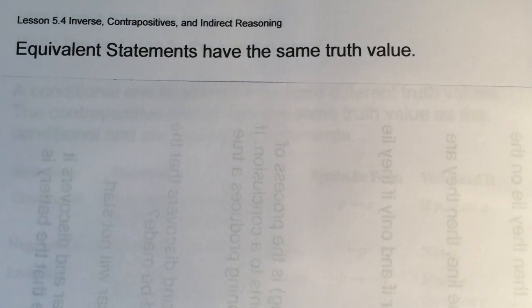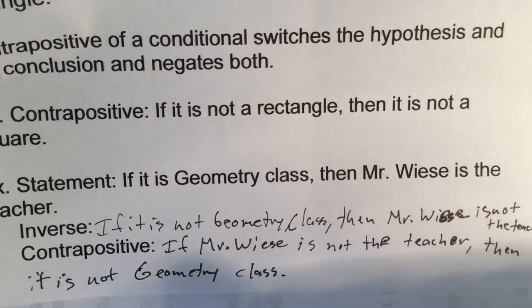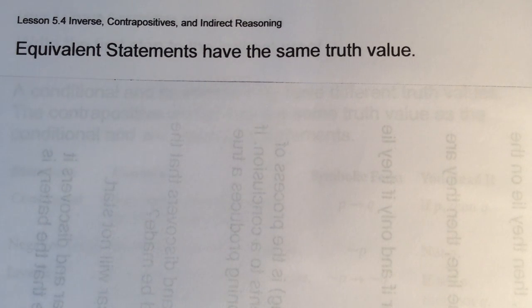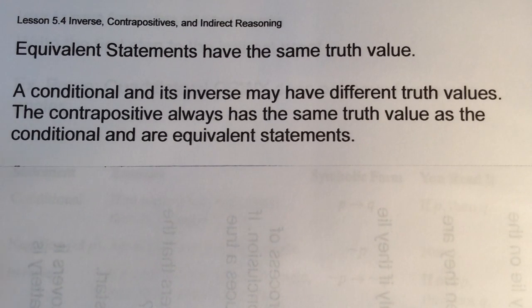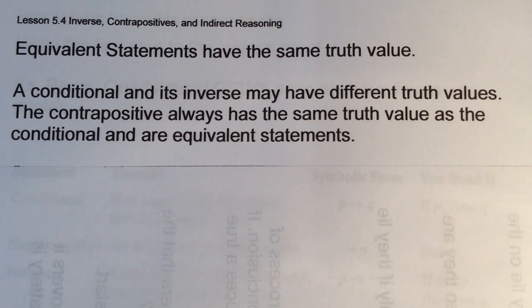Equivalent statements have the same truth value. The conditional was true and the contrapositive was true, so those are equivalent statements. The conditional and the inverse may both be true, or one may be true and the other false. However, the contrapositive will always have the same truth value as the conditional — they will always be equivalent statements.